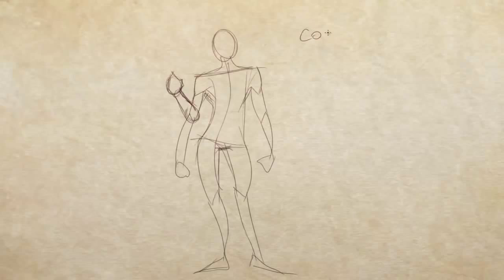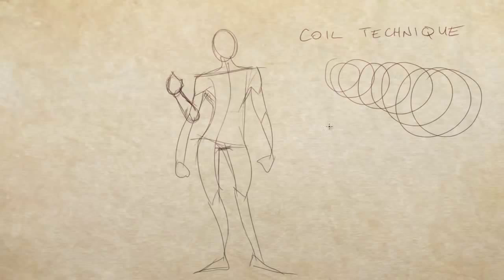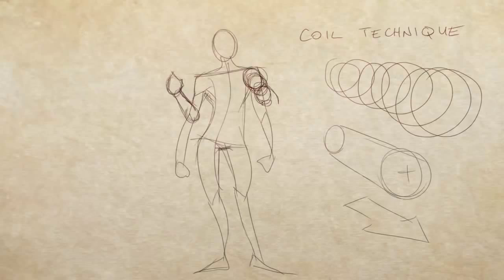And that's where a different technique comes into play that I find is really effective. I call that the coil technique. So when I want to do something foreshortened, I'm going to make these kind of coiling movements. Let's say this was a cylinder. Notice how it gets bigger towards us? So it looks like it's coming towards us.